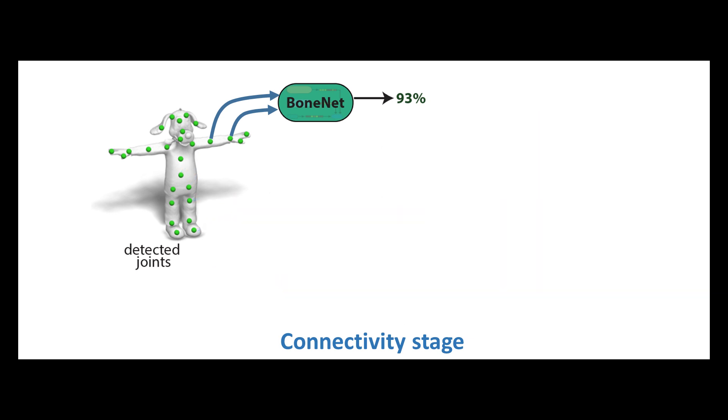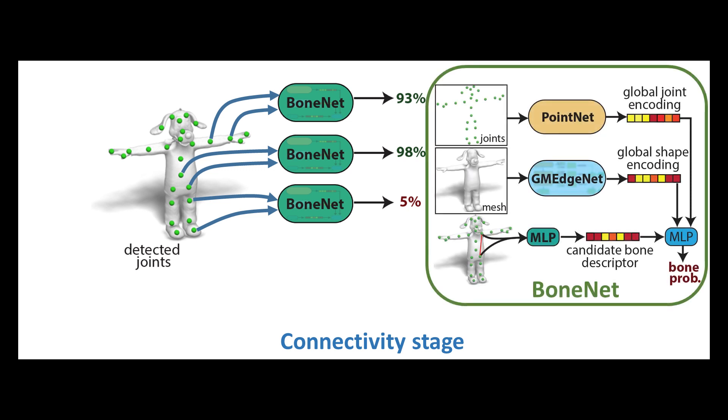Specifically, each pair of joints is processed through a network that assesses the probability that that pair would be connected. The network is based on analyzing joints, global shape information, and candidate bone representations collectively.